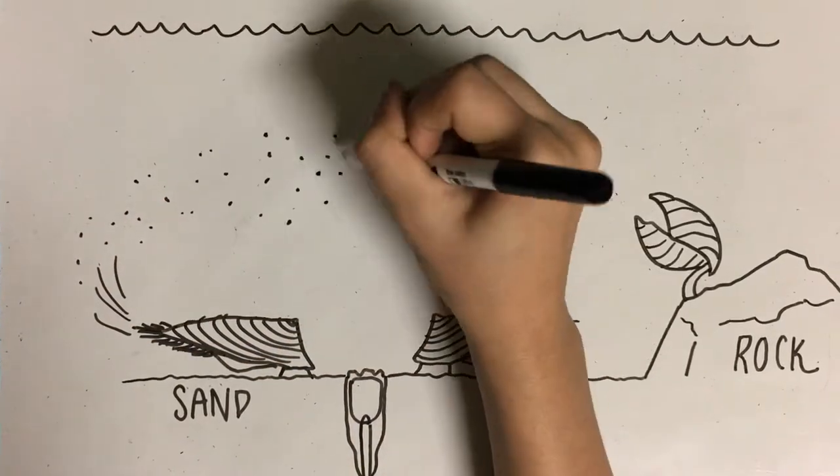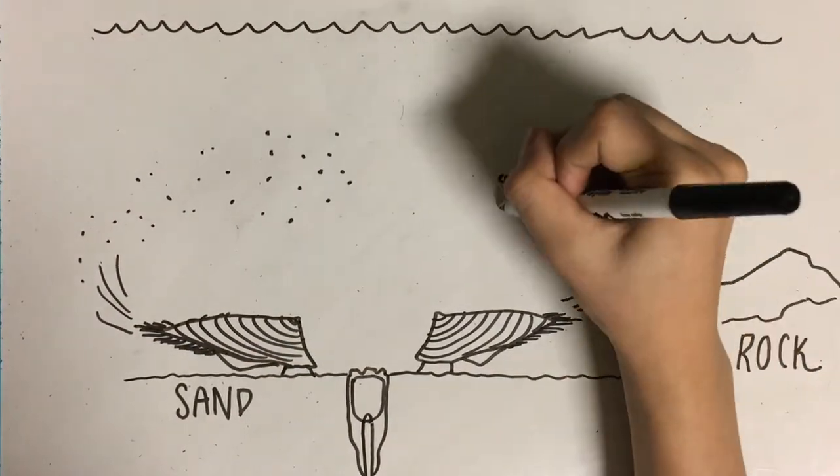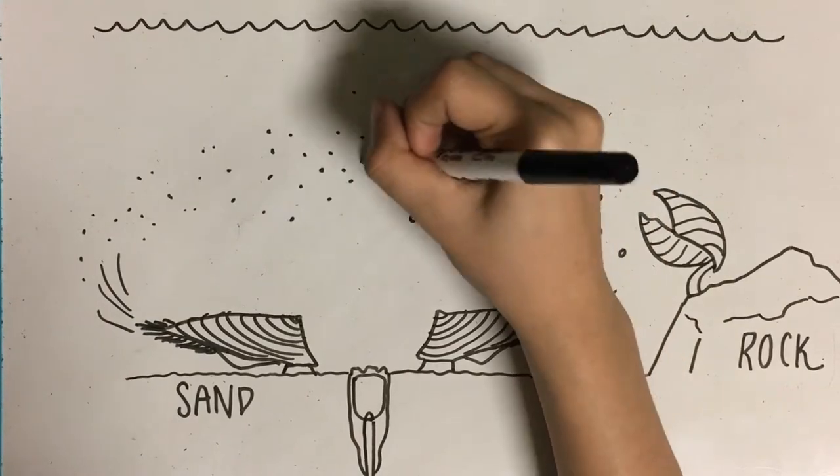Brachiopods have transient gonads that develop from the peritoneum of the mesentery, and gametes are released through the metanephridium.